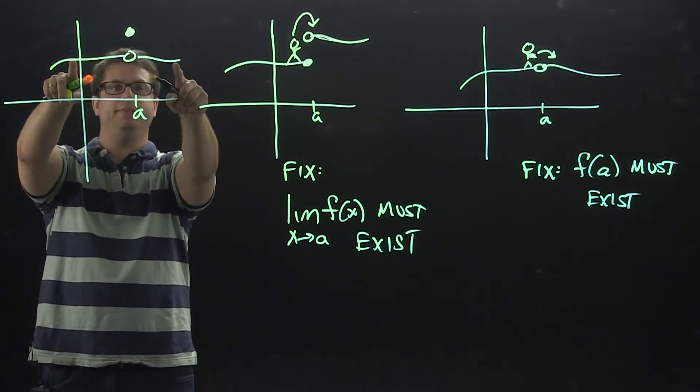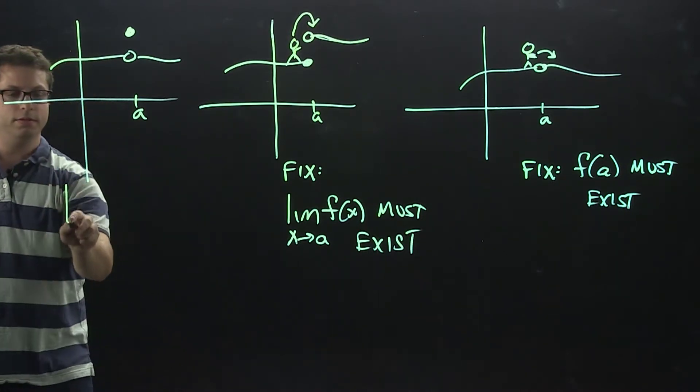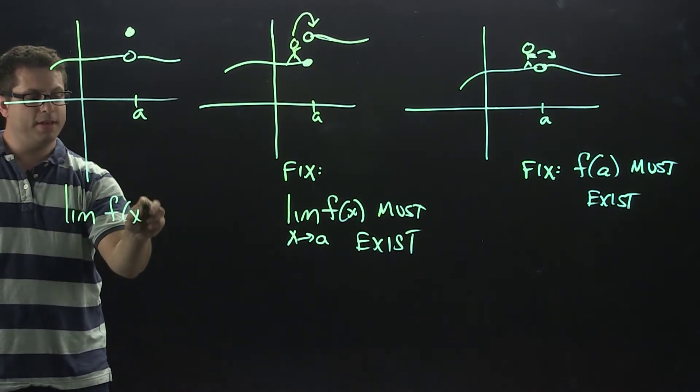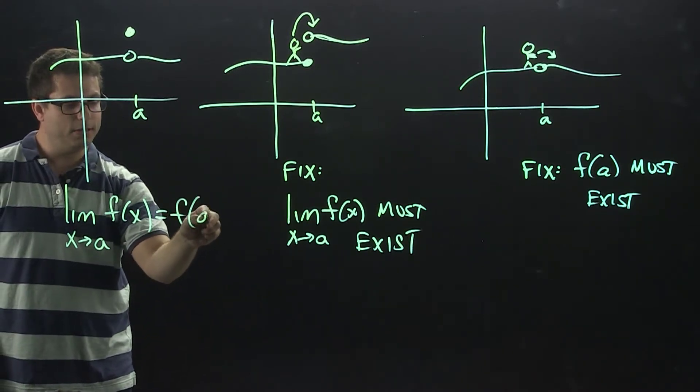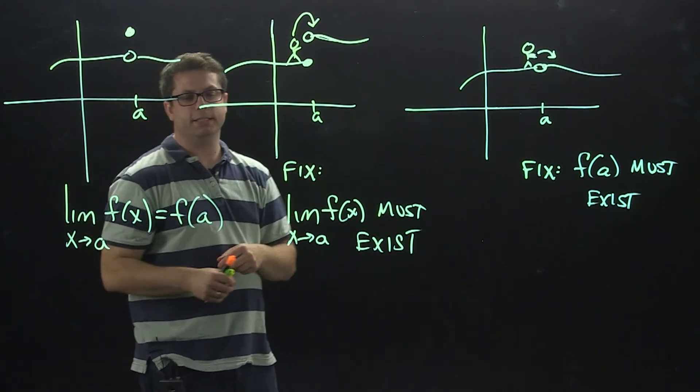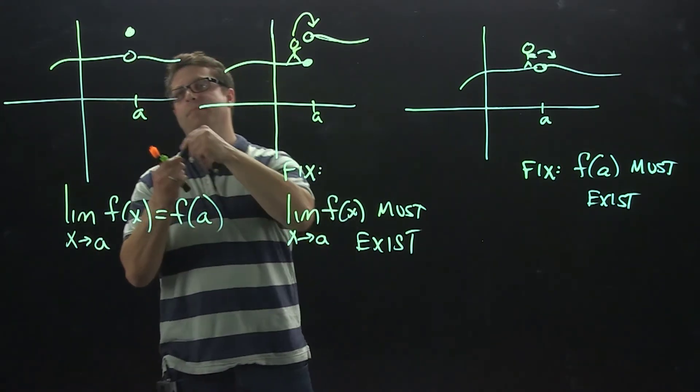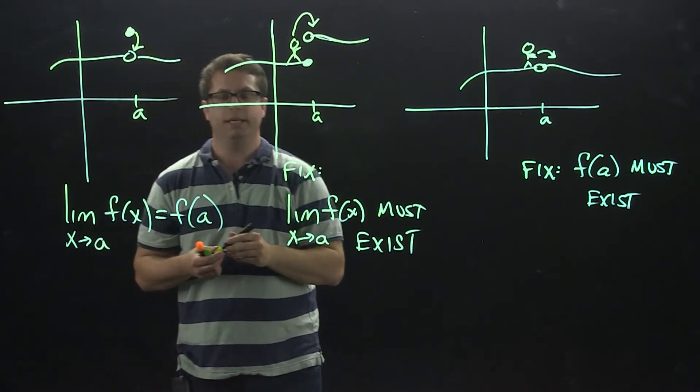Well, I need the limit to match the function value. The limit of f of x as x approaches a must actually equal f of a. If you satisfy all three of these conditions, basically meaning that this point is going to go in here, we will be continuous.